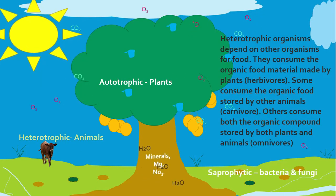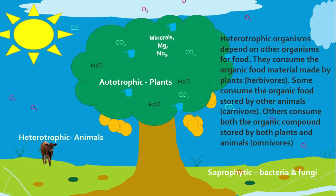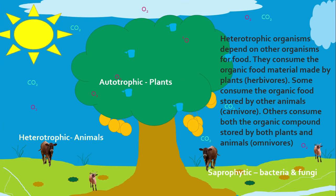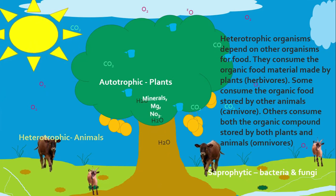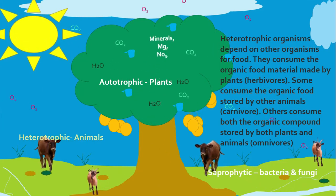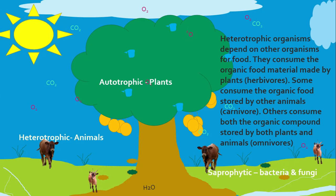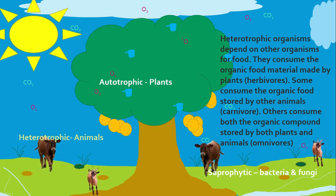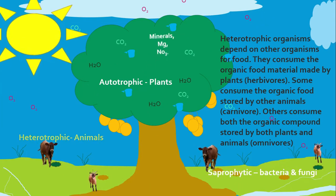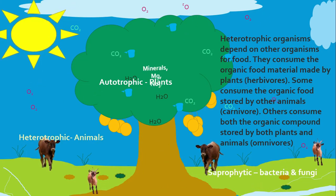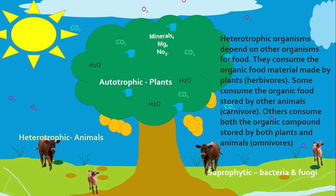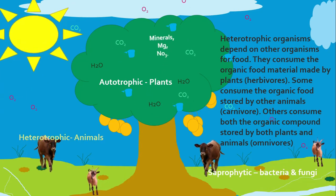Another type of nutrition is heterotrophic nutrition. In heterotrophic nutrition, organisms depend on other organisms for food. They consume the organic food material made by plants — these are called herbivores. Some consume organic foods stored by animals and they are called carnivores. Others consume both organic compounds from plants and animals; these organisms are called omnivores. Your heterotrophic organisms are always going to be animals.